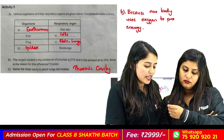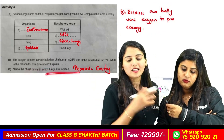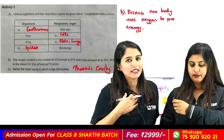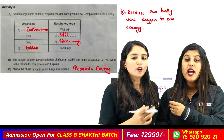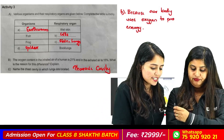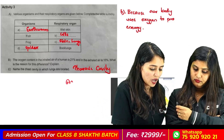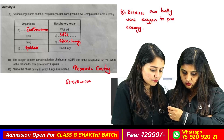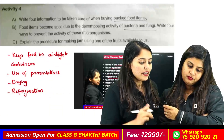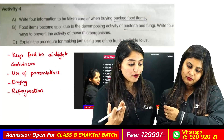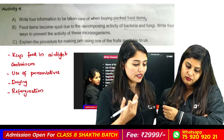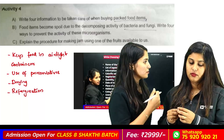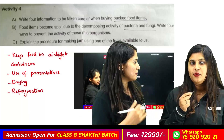The chest cavity, in which the lungs are located — we will see what the lungs are about. The thoracic cavity — that is the size of that region. Write four pieces of information to be taken care of when buying a packet of food items.